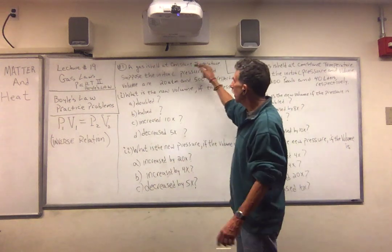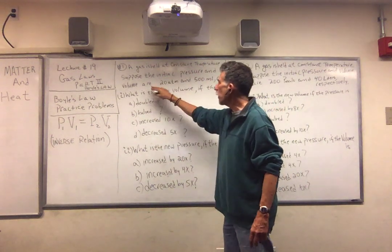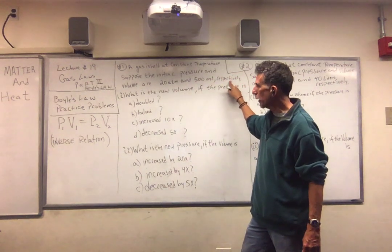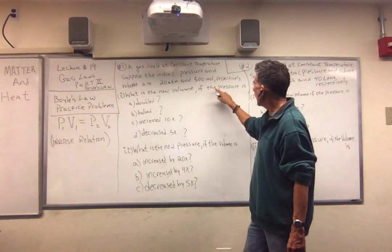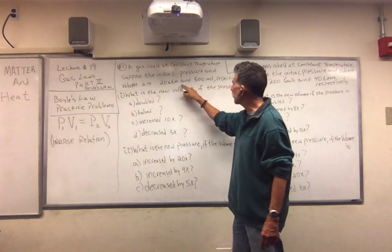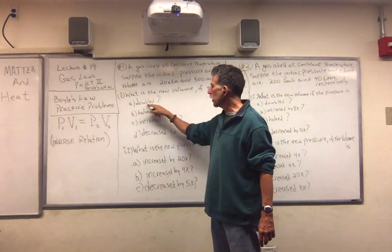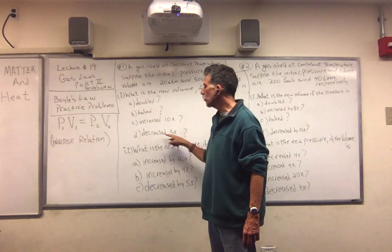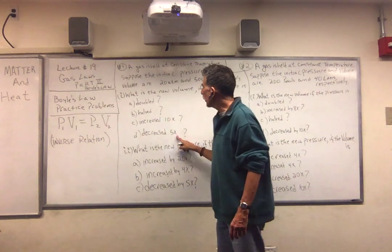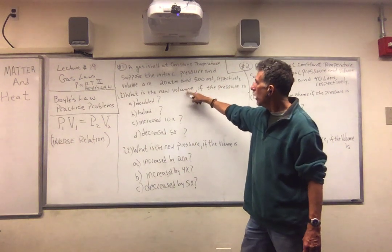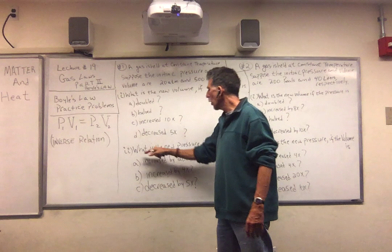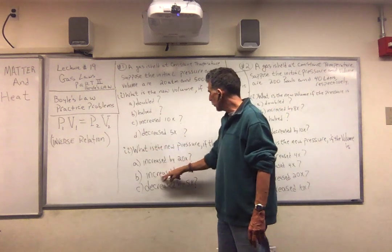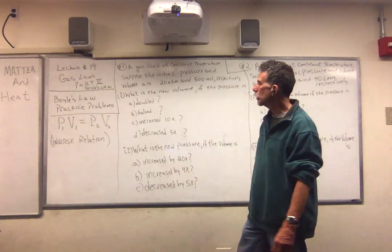So here's the problem. A gas is held at constant temperature. Suppose the initial pressure and volume are 20 atmospheres and 500 milliliters, respectively. What is the new volume if the pressure is doubled, halved, increased by 10 times, or decreased by 5 times? We want to know what happens to the volume. The second part of the question asks the reverse: what is the new pressure if the volume is increased by 20 times, increased by 4 times, or decreased by 5 times?